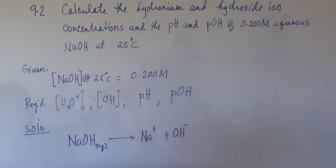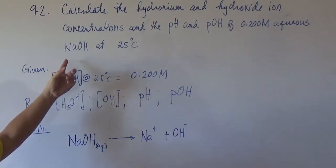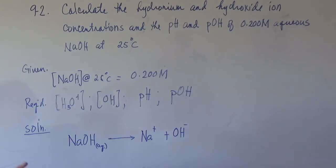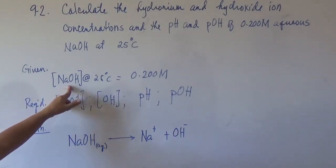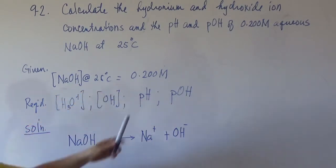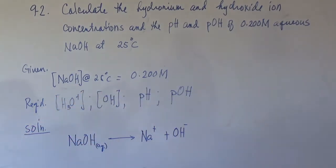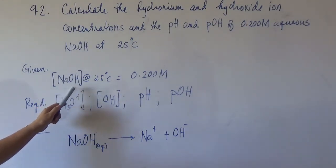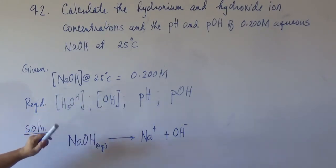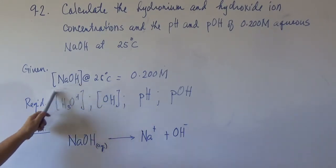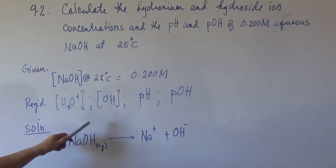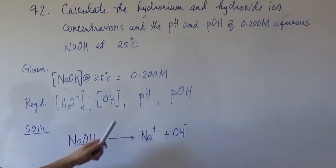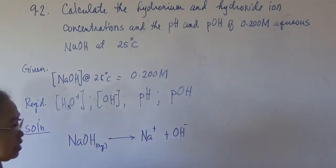Problem 9-2: Calculate the hydronium and hydroxide ion concentration, and the pH and pOH of a 0.2 molar aqueous solution of sodium hydroxide at 25 degrees Celsius. We are given the concentration of sodium hydroxide at 25°C as 0.2 molar. We are required to determine the concentration of the hydronium ion from the dissociation of water, the concentration of the OH⁻ ion, the pH, and the pOH.